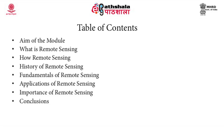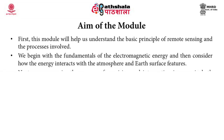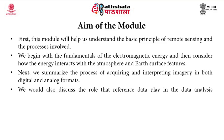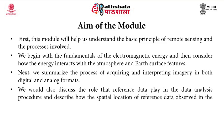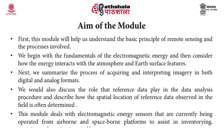The aim of the module is to help us understand the basic principle of remote sensing and the processes involved. We will begin with the fundamentals of electromagnetic energy and then consider how the energy interacts with the atmosphere and Earth's surface features. Next we will summarize the process of acquiring and interpreting imagery in both digital and analog formats. We will also discuss the role that reference data plays in data analysis and describe how the spatial location of reference data observed in the field is determined. This module deals with electromagnetic energy sensors currently being operated from airborne and spaceborne platforms to assist in inventory mapping and monitoring Earth's resources.